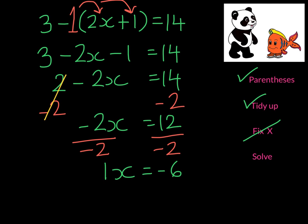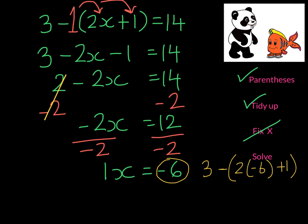At this point I can check carefully — there are a lot of signs and numbers here. So we have 3 and we're going to subtract 2 times our solution which is negative 6, then add 1 to it. This will give me negative 12 plus 1 which gives me negative 11. We have the 3. Remember the minus with the minus will give me a plus for the 11, so we get 14. So we solved it correctly.